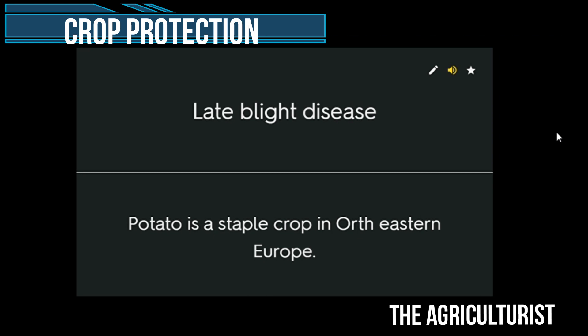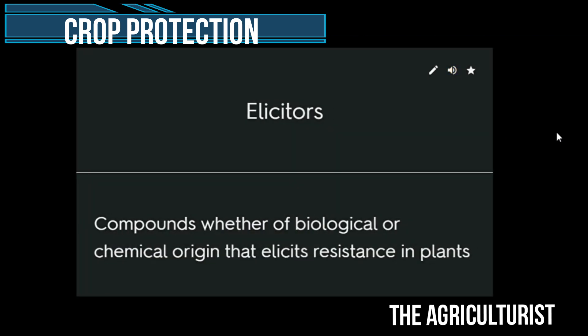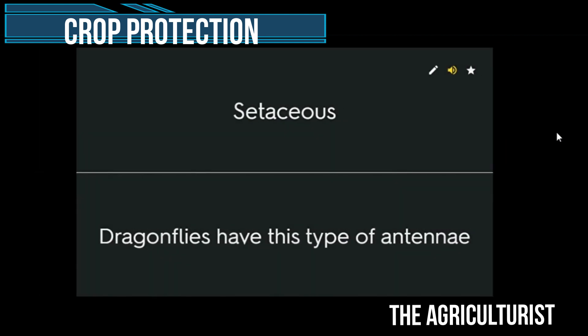Late blight disease — potato is a staple crop in northeastern Europe. Cerci — appendages found in the abdomen of an insect. Plant elicitors — compounds whether of biological or chemical origin that elicit resistance in plants. Purple nutsedge — Cyperus rotundus. Setaceous — dragonflies have this type of antennae.